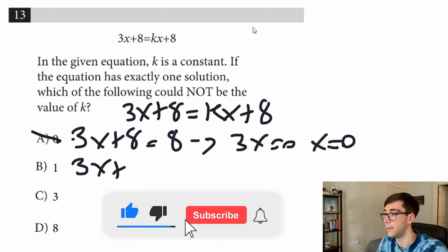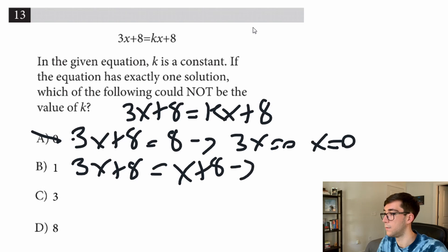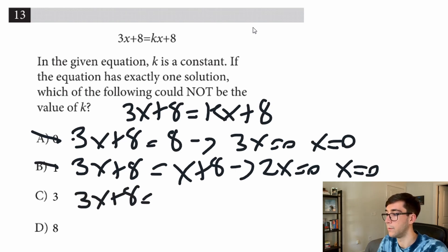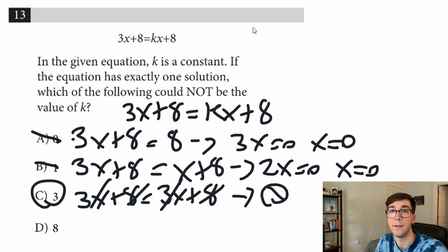Next one, 3x plus 8 equals 1x plus 8. That's going to give us 2x equals 0, so x equals 0. Can't be that one. Let's try C. 3x plus 8 equals 3x plus 8. X's cancel, 8's cancel. So there is no solution. C is our answer.